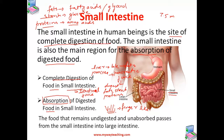The role of the villi is to increase the surface area of the small intestine. The surface of the villi absorbs the digested food material into the blood flowing through them, and this blood carries the absorbed food material to cells in all parts of the body. In the cells, this food is used for energy, growth, and repair — this is called assimilation.